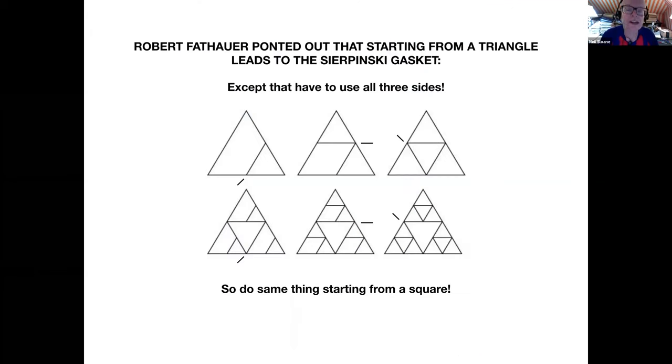The reason I called this a gasket at the beginning was that Robert Fathauer pointed out that if instead of starting with a square, we start with a triangle, an equilateral triangle, and instead of alternating between the base and the left side, if we go around all three sides in turn, we get the Sierpinski gasket. Look, start with a triangle, find the midpoint of the base, draw a line, go to the right side, find the midpoint, draw a line, and so on. After six steps, you get this. After nine steps, you get the next generation of Sierpinski. But it's different from the original Conan construction because it goes around all sides and it's based on a triangle.